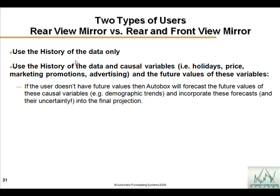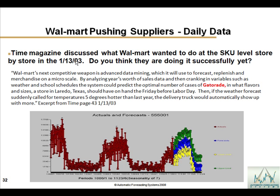Using causal variables: there are two types of users — those who only use history, and those who use history plus causals. If you're not incorporating causal information into your process, you're not using all the information at hand. Walmart and Time Magazine have discussed what if you include school schedule and weather to forecast Gatorade at a given store on a given day. You can do that with AutoBox.